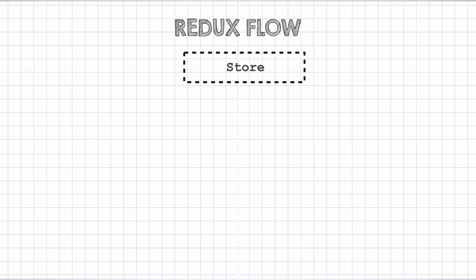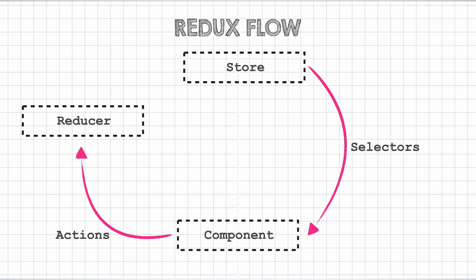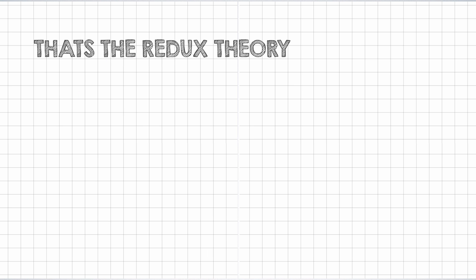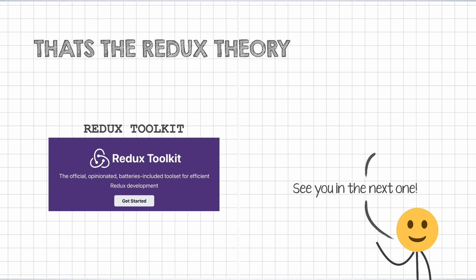Here's a summarized view of all that. We have a store that is accessed by the component via selectors. The component dispatches actions which are intercepted by a reducer function that processes the actions and generates the new state in the store. And that's all there is to the theory part of it. We will look into how this can be practically implemented using Redux Toolkit in the next video. See you in the next one.